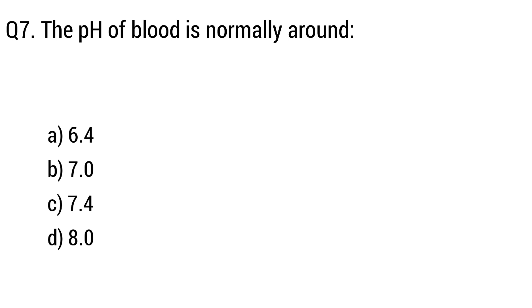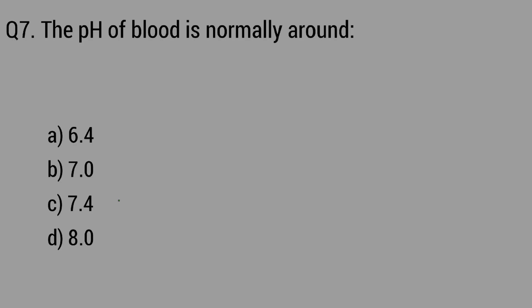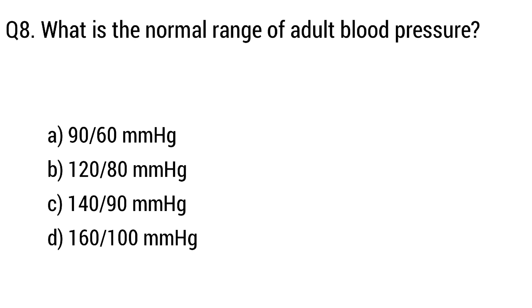Question 7. The pH of blood is normally around. Option A: 6.4. The right answer is Option C: 7.4. Question 8. What is the normal range of adult blood pressure? The right answer is Option B: 120/80 mmHg.